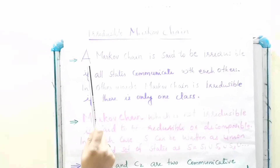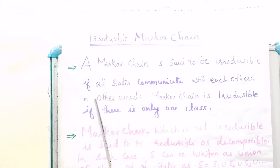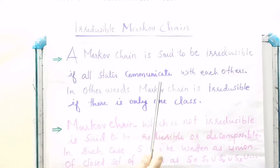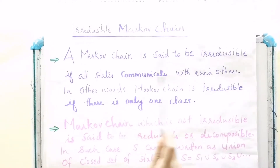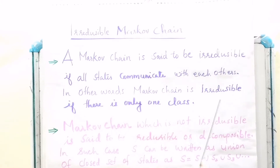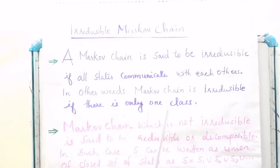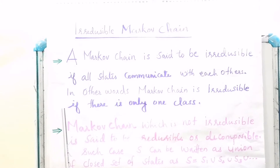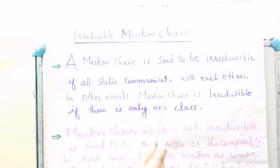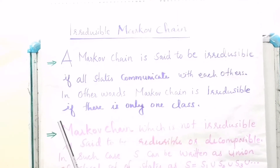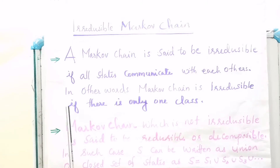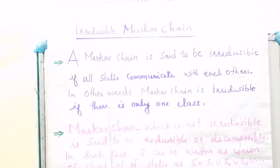Irreducible Markov chain. A Markov chain is said to be irreducible if all states communicate with each other. In other words, a Markov chain is irreducible if there is only one class. That is, if a Markov chain is irreducible, then all states communicate with each other, and there is only one class.